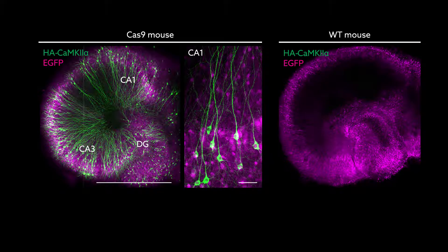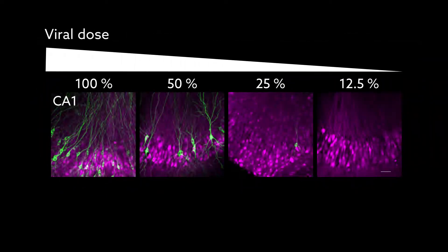The experiments used genetically engineered mice expressing the Cas9 protein. But the success rate depended on the dose of the virus.